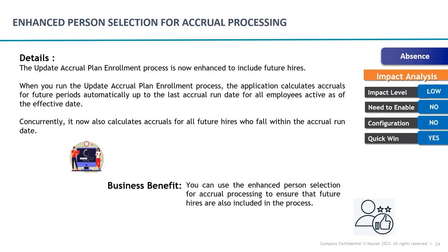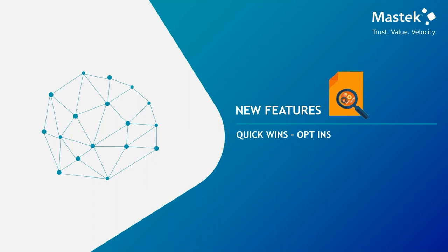Oracle has also enhanced person selection for accrual processing. The system now gives more control over which persons to process when running accruals — including whether to process future accruals automatically. For example, if an enrollment plan runs for a full year, employees starting in the future will also be evaluated during accrual processing. This is the announcement: future employees will now be picked up when running accrual processing.